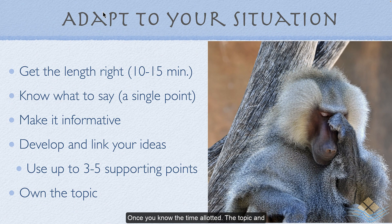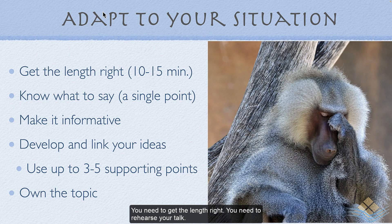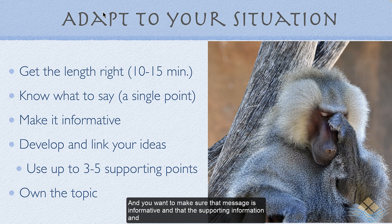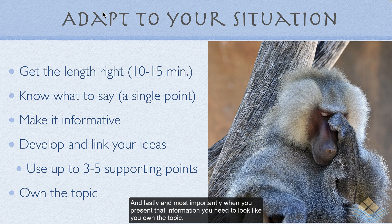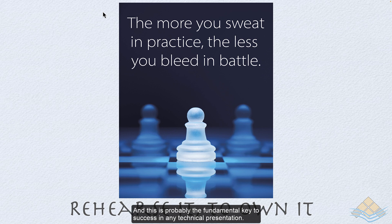Once you know the time allotted, the topic, and the message you want to get across, you need to adapt to that situation. Get the length right. Rehearse your talk. Make sure you have a single point — the message of your talk — and that the message is informative, with supporting information developed and linked during the body, typically using three to five supporting points or major objectives. And most importantly, when you present that information, you need to look like you own the topic — be a confident, well-practiced, well-rehearsed speaker. You need to rehearse it to own it.